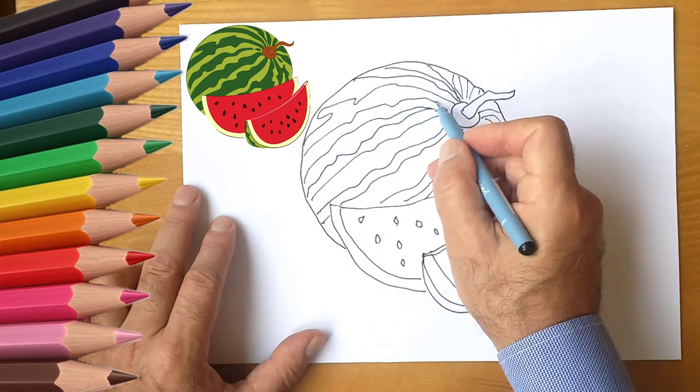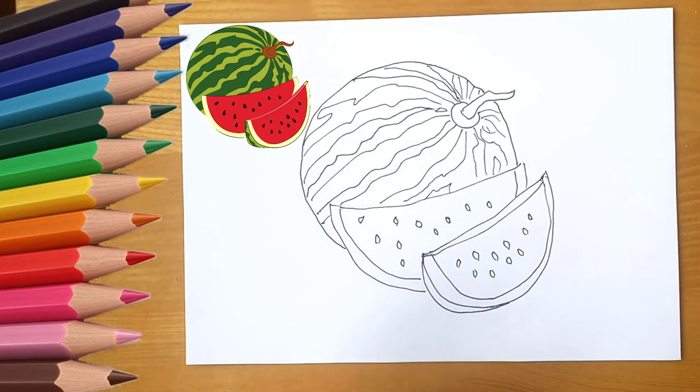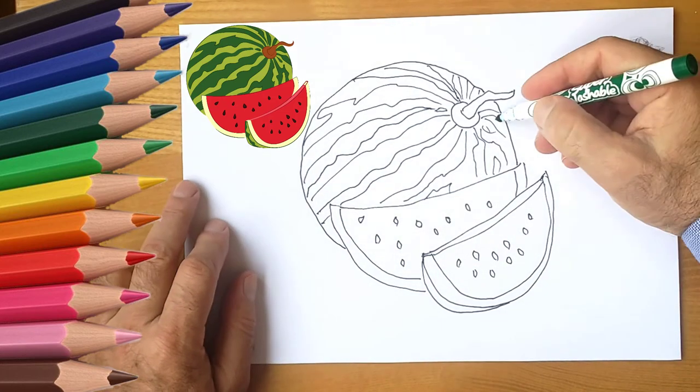These stripes are different shades of green. Draw a watermelon stock. In ripe watermelon it is dried and dark yellow.